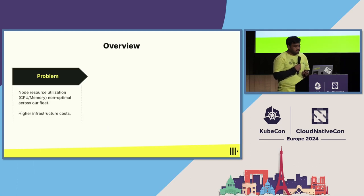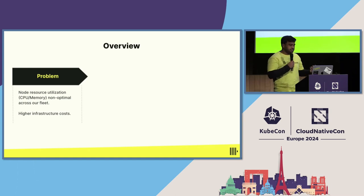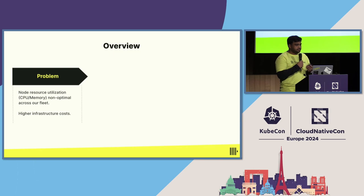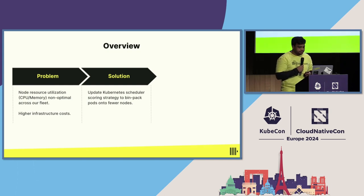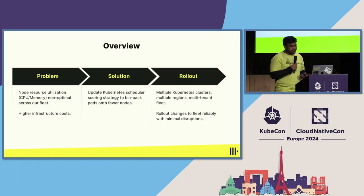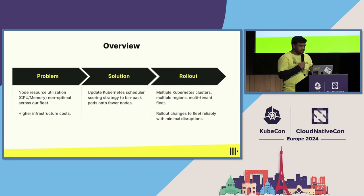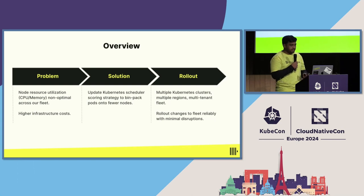So what is the problem we were facing? In our Kubernetes clusters, which are multi-tenant and present in multiple regions, we noticed that node resource utilization — CPU and memory — was non-optimal across the fleet. This meant higher infrastructure costs because we were running more nodes than required. We explored a few different solutions and settled on updating the Kubernetes scheduler scoring strategy to bin-pack pods onto fewer nodes, and then rolled this out reliably so existing customers don't face disruptions.